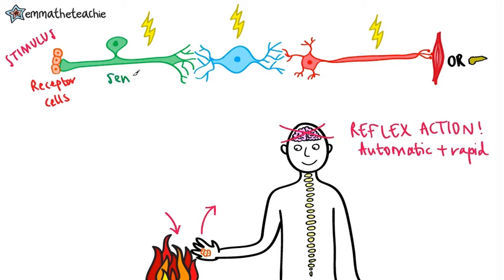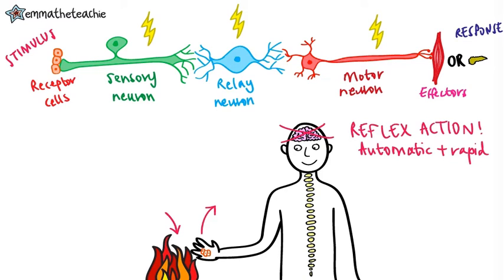Okay, so we start with receptor cells, then the sensory neuron, the relay neuron, the motor neuron, the effectors, and finally, the response. If you need to recap this, go back to my nervous system video.